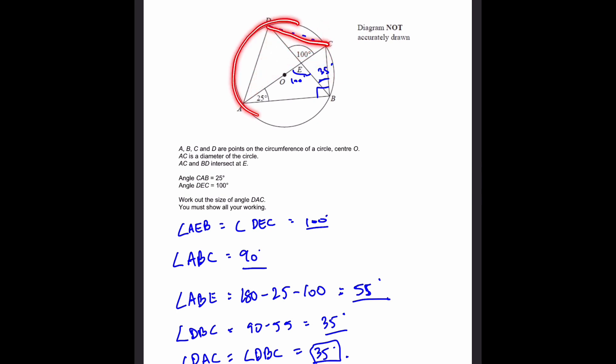So this chord splits the circle into two segments: one over here and one tiny one over there. This angle, 35 degrees, will be in the same segment over here, which is inside the major segment. And that's why they're equal. Well, that'll be our answer.